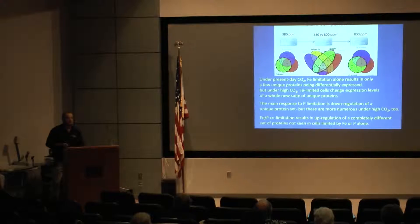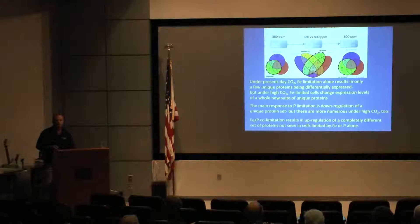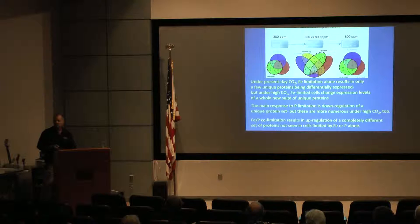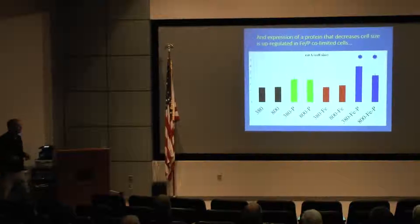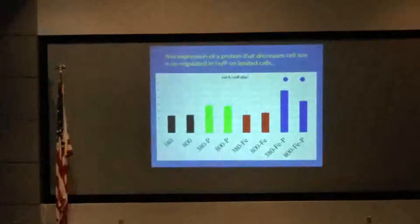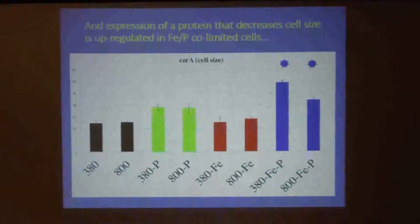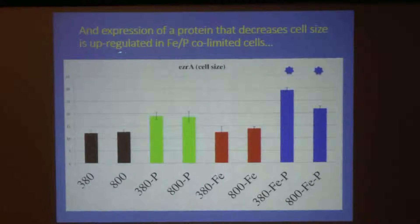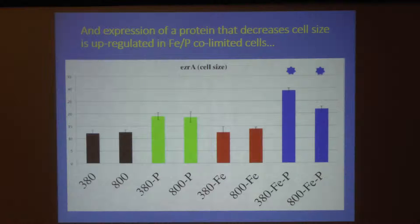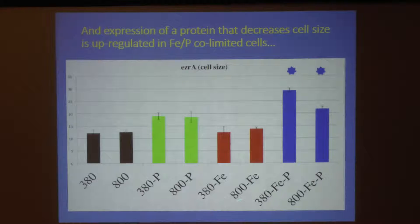Right now we're looking in those boxes to see what those proteins are. Some of them are things you would expect to see under iron and phosphorus limitation; others are not. But I will show you the results for one, because it's cool. This is EZRA, which controls cell size in bacteria. Remember I told you they got miniaturized in the iron and phosphorus co-limited ones? They are expressing this protein, which miniaturizes bacteria. If they're not expressing it, they get bigger. And sure enough, that protein is being highly expressed — this is a spectral count, just relative expression — in the iron and phosphorus co-limited treatments. So that fits with what we've observed.